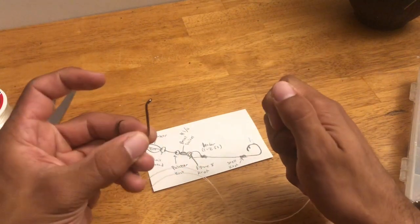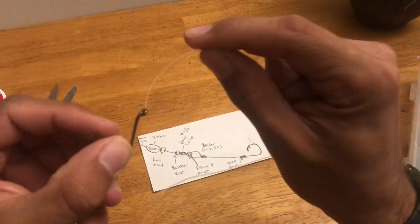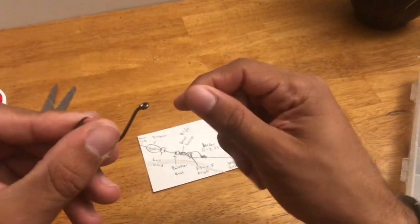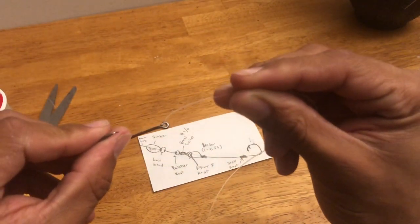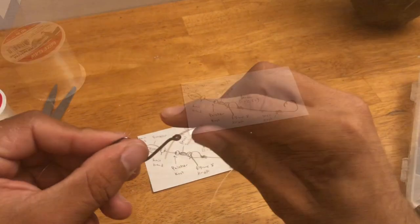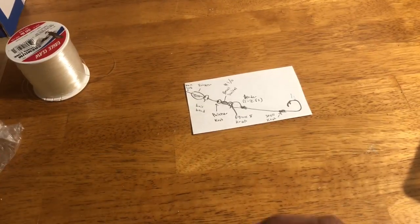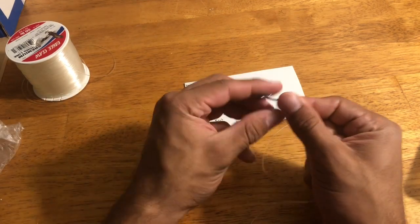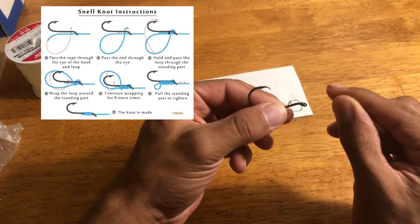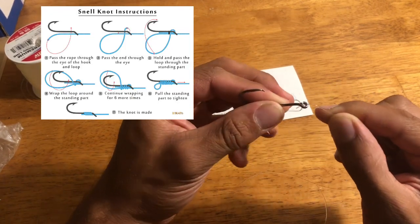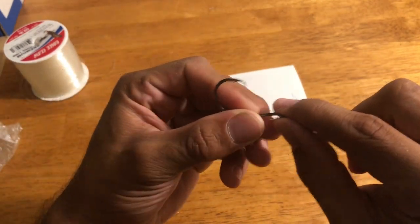So anyways, the first knot you want to tie on this is a snell knot or a knotless knot, they'll call it. So you want to put the string or the leader through the eye. All right, sorry about that. My phone randomly died. It was very rude of it. Anyways, as I was saying, so you start with the snell knot, you put the leader through the eye.